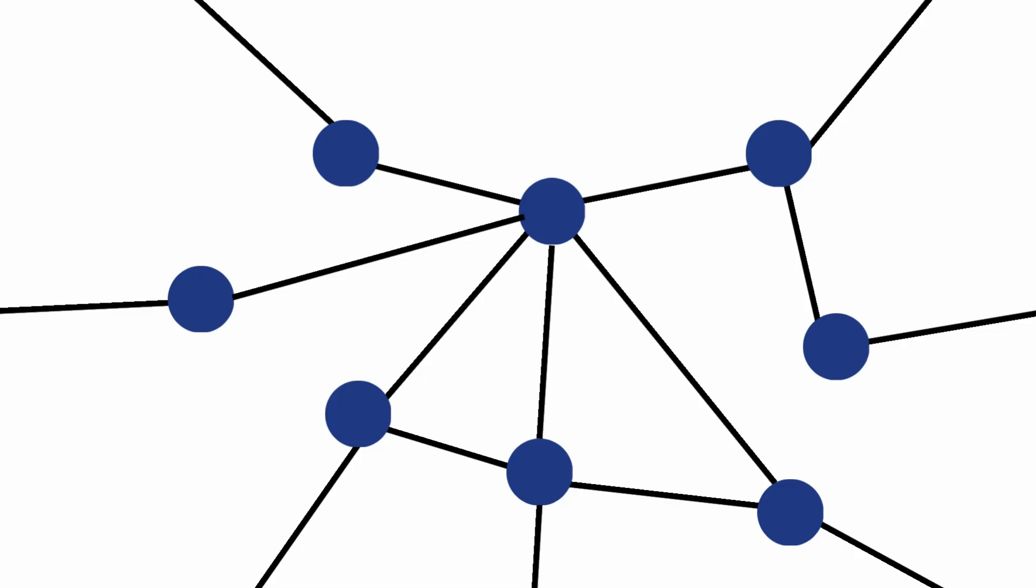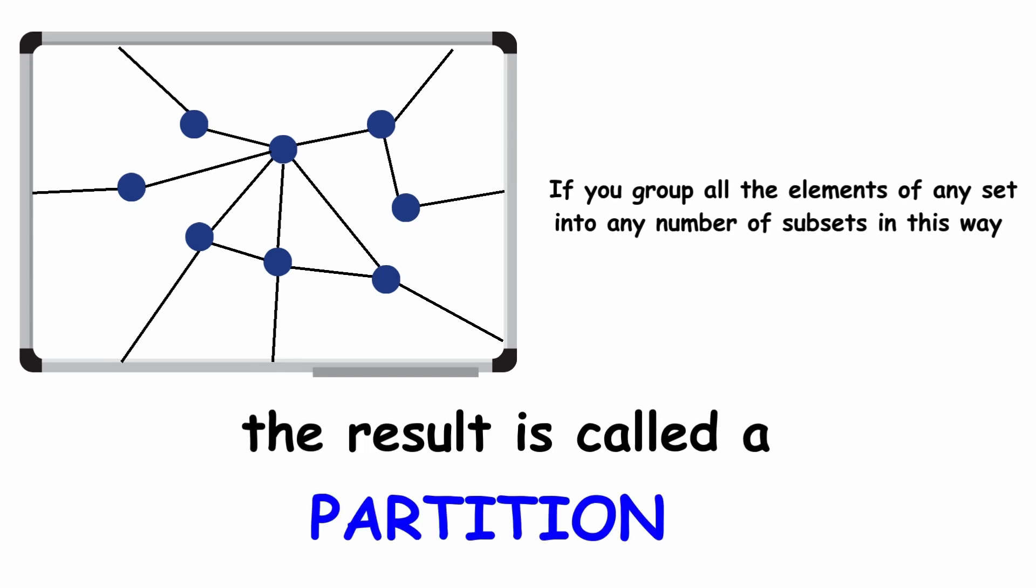Each new set is a subset of the set of all vertices. If you group all the elements of any set into any number of subsets in this way, the result is called a partition.